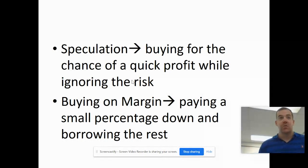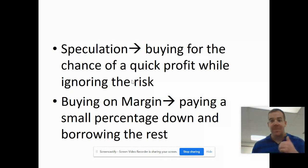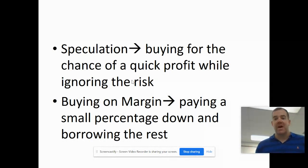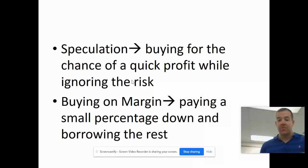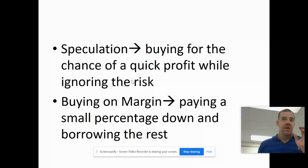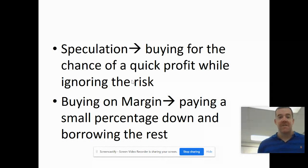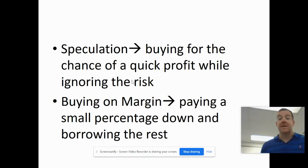For example, last year a lot of people were speculating on the Cleveland Browns making the Super Bowl — probably the worst franchise in the NFL — but people were putting money down in Las Vegas for them to make the Super Bowl. That is speculation: the chance of making a quick profit while ignoring the risk.